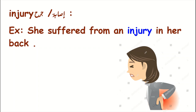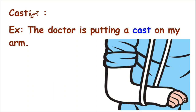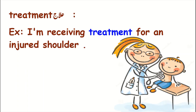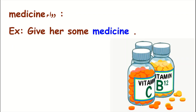Number six is 'injury,' which means 'isabah aw jurh' in Arabic. For example: 'She suffered from an injury in her back.' The next word is 'cast,' which means 'jibirah' in Arabic. For example: 'The doctor is putting a cast on my arm.' Then we have 'treatment,' which means 'ilaj.' For example: 'I am receiving treatment for an injured shoulder.'